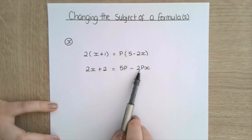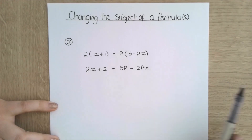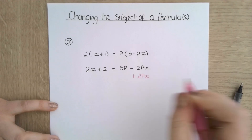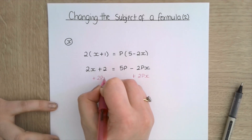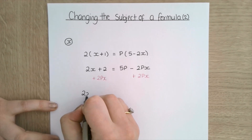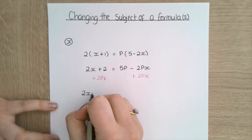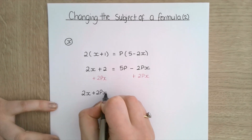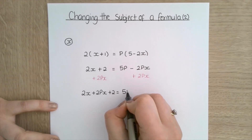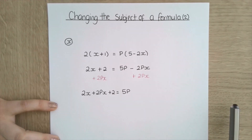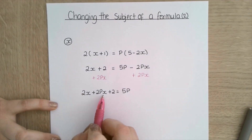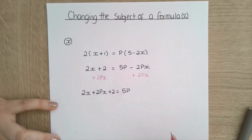So the first thing I'm going to do is add 2px to both sides. This is going to leave me with 2x plus 2px plus 2 is equal to 5p. Now I have got x's here and that's fine, but I've also got this random 2.